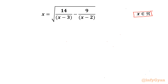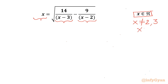Let us get started. The denominators cannot be zero for a real solution, so x equals 2 is not possible and x equals 3 is not possible. Also, from the left-hand side we can conclude that x must be positive.